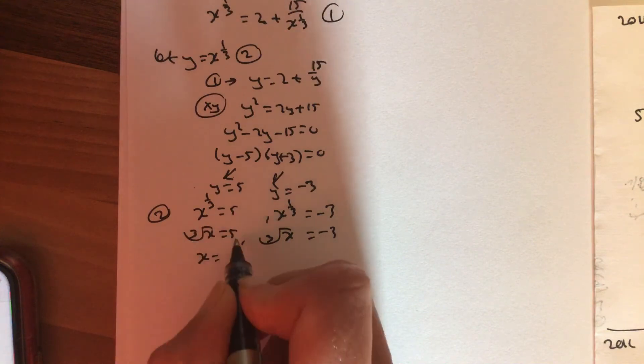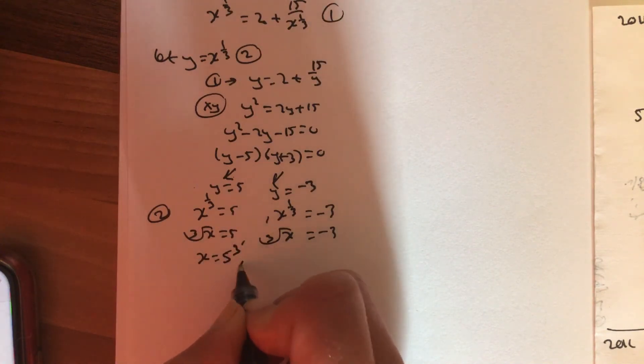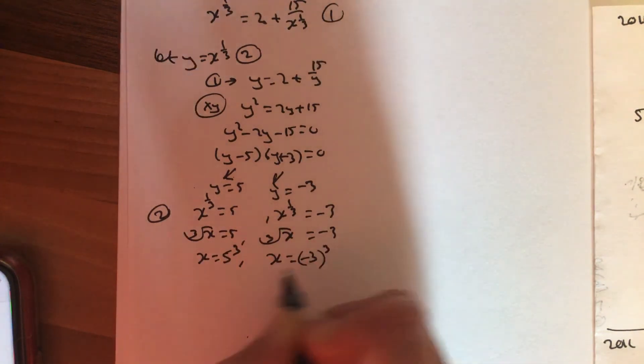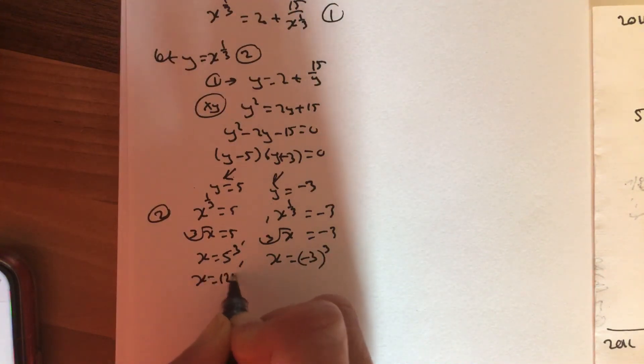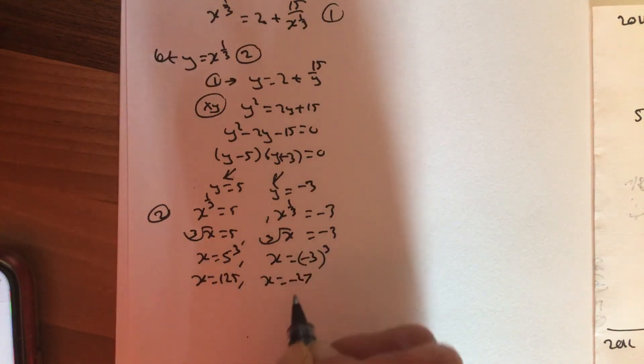To find the x, bring the cube root over. Opposite of cube root is the cube. So it's minus 3 cubed and 5 cubed, giving you 125 and minus 27.